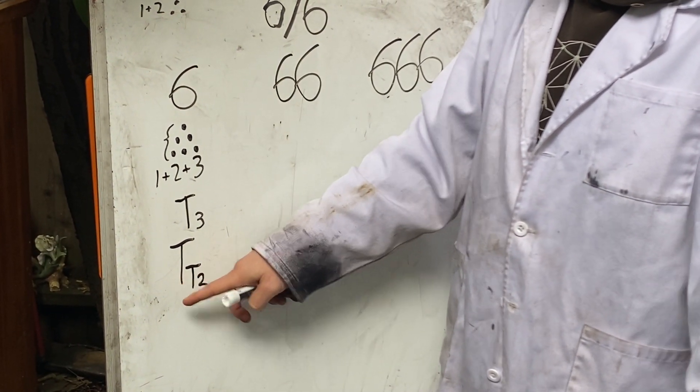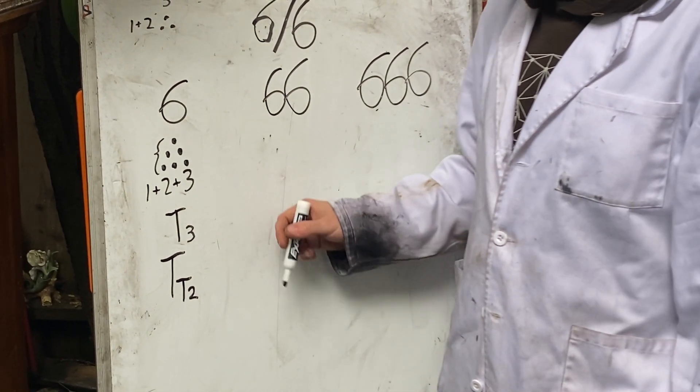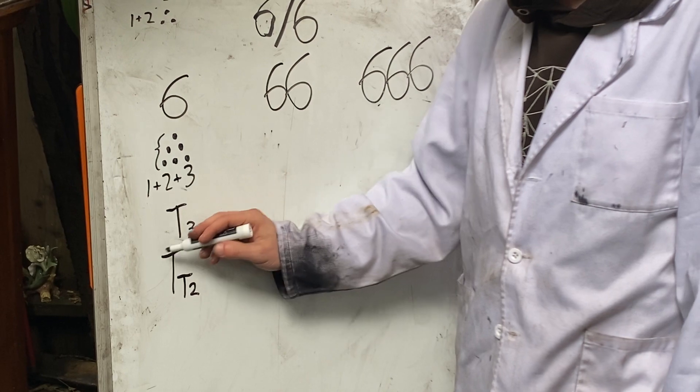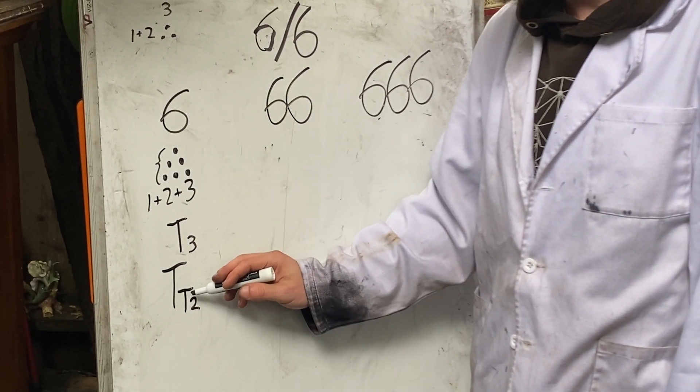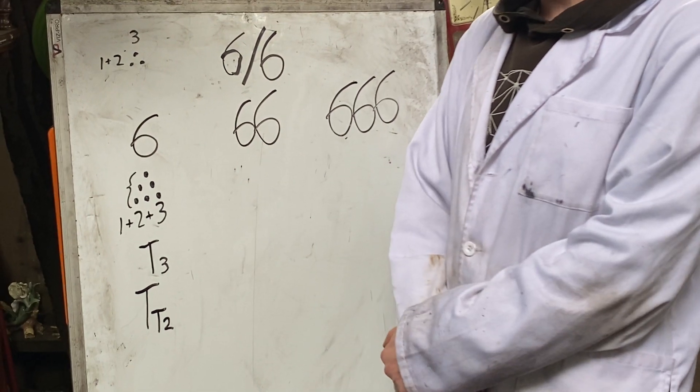And so T of T2 is the same as T3, six. And if we can write a number in this form of a triangular number whose index is a triangular number, that number is doubly triangular.